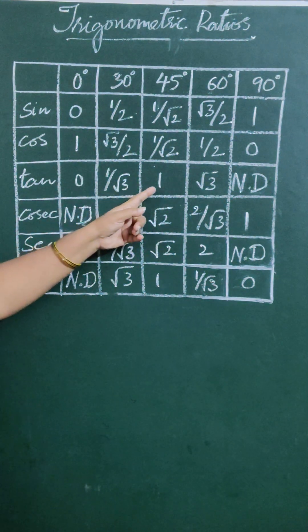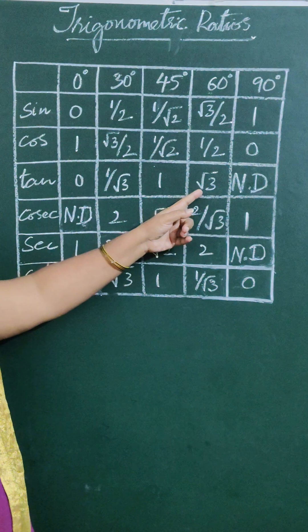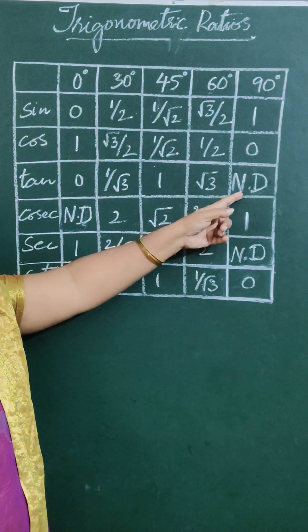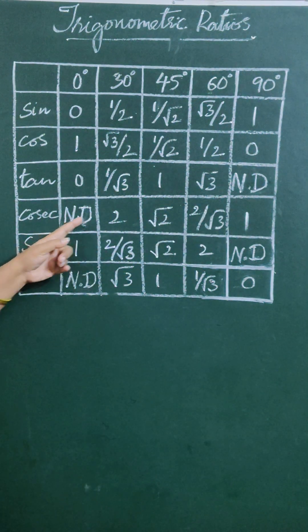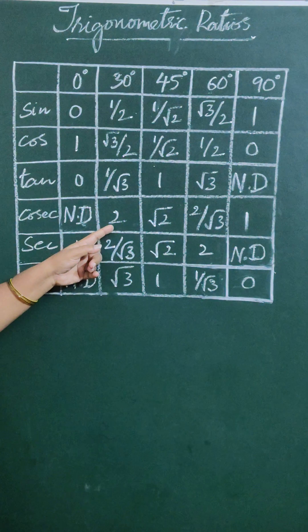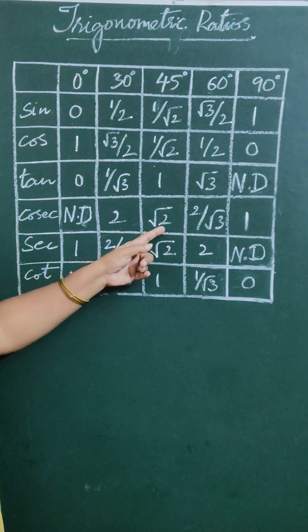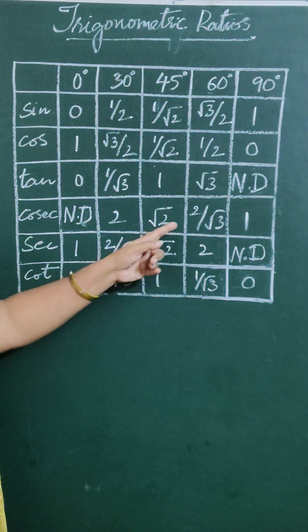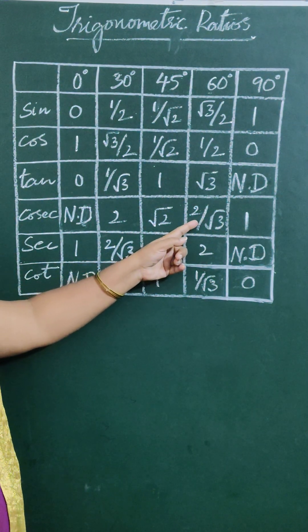tan 0° = 0, tan 30° = 1/√3, tan 45° = 1, tan 60° = √3, tan 90° is not defined. cosec 0° is not defined, cosec 30° = 2, cosec 45° = √2, cosec 60° = 2/√3.